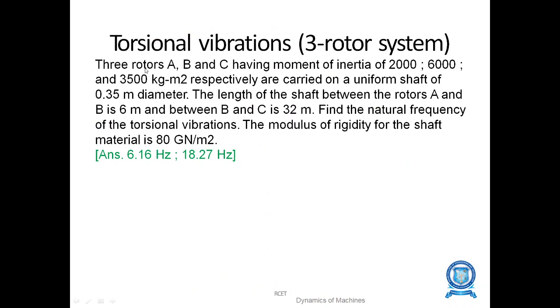Take this problem as a homework. The three rotors A, B, C have mass moment of inertia MK square 2,000, 6,000 and 3,500 kg meter square respectively. Its I value is given which is carried on a uniform shaft of diameter D is common 0.35. The length of the shaft between rotors A and B is 6 meter and B and C is 32 meter. Total length is between A and B is 6 and B and C is 32. Find the natural frequency of torsional vibration. Take modulus of rigidity 80 giga newton per meter square.